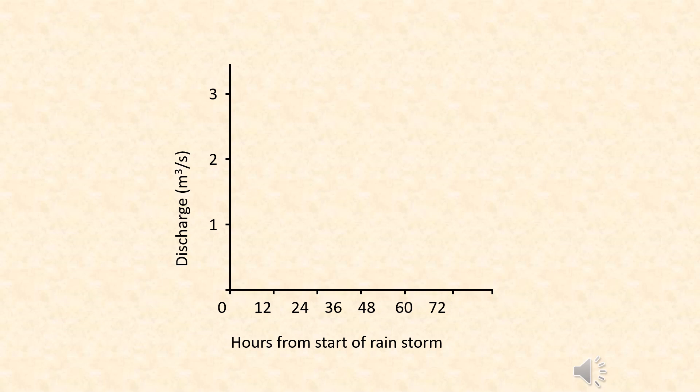We start with the simple x and y axes. On the x-axis we measure time — in this case in hours from the start of a rainstorm — and on the y-axis we measure discharge: the amount of water that is passing through the river at any given point.